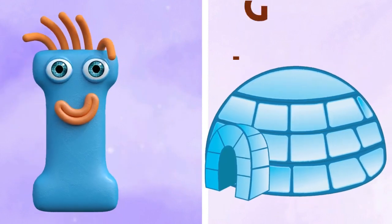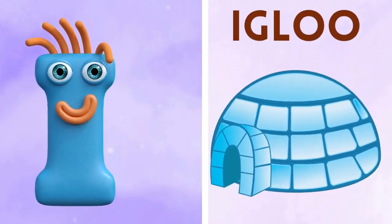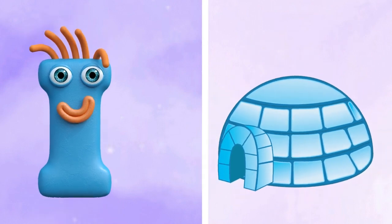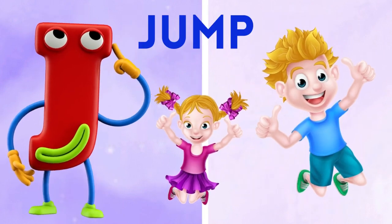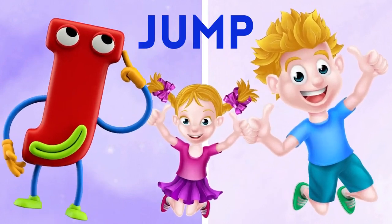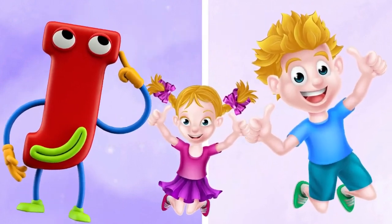I is for igloo, i-i-igloo. J is for jump, j-j-jump.